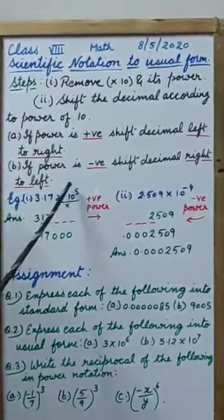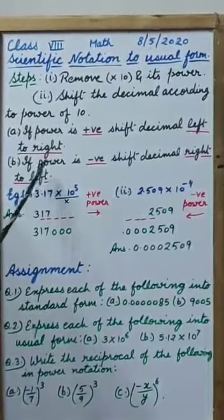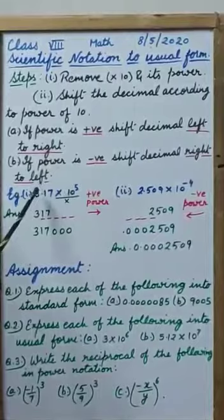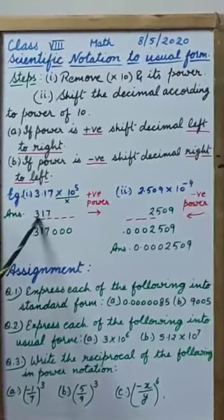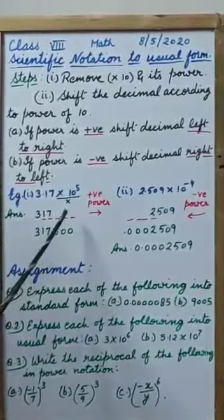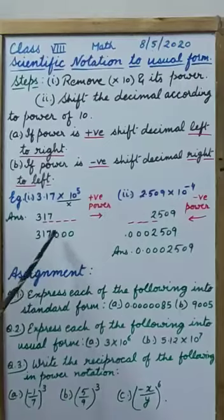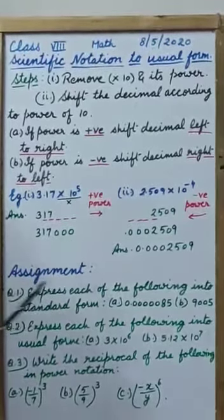Here power is positive, so we have shifted the decimal from left to right 5 places. Here the decimal was, so we have written 5 dashes here. And then 1 and 7 is already there. It means 3 dashes are there. In those 3 dashes we will put 0.